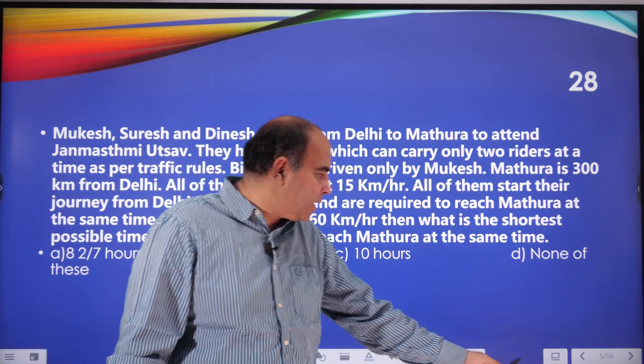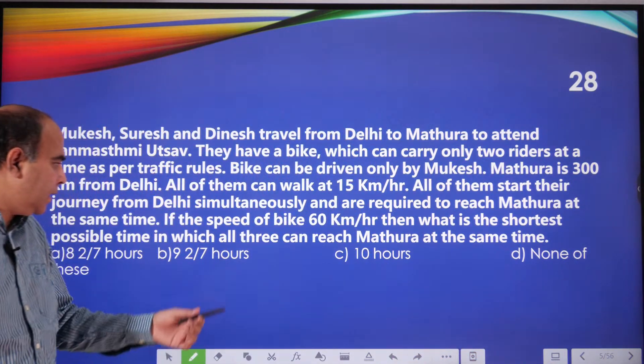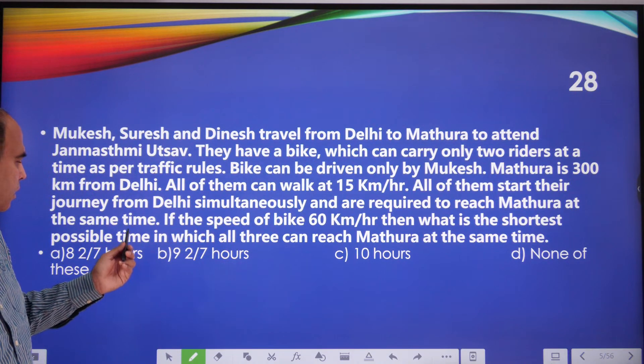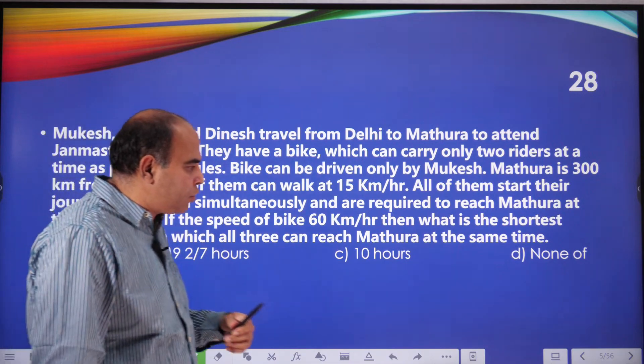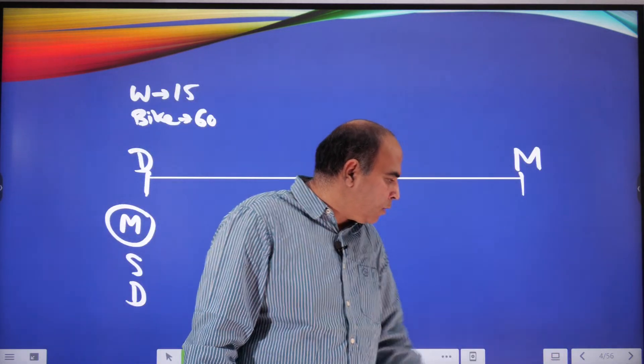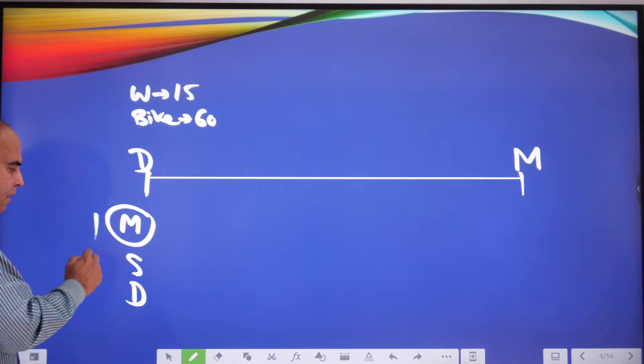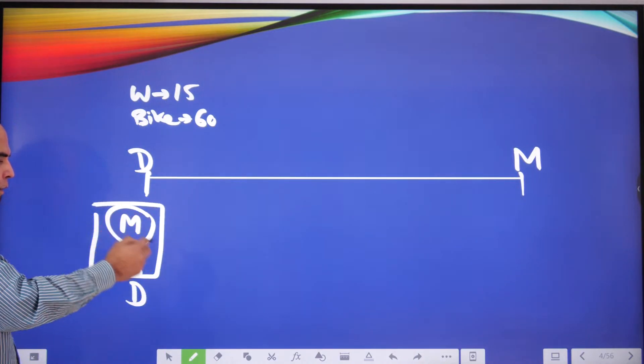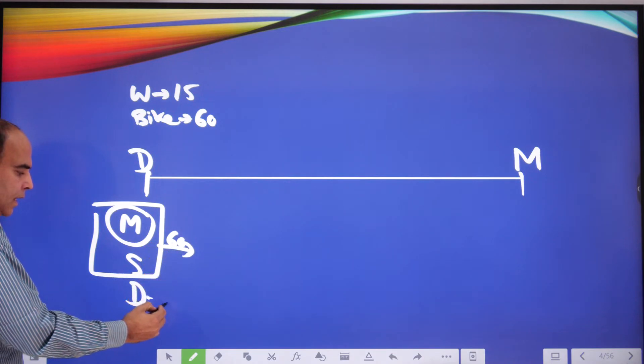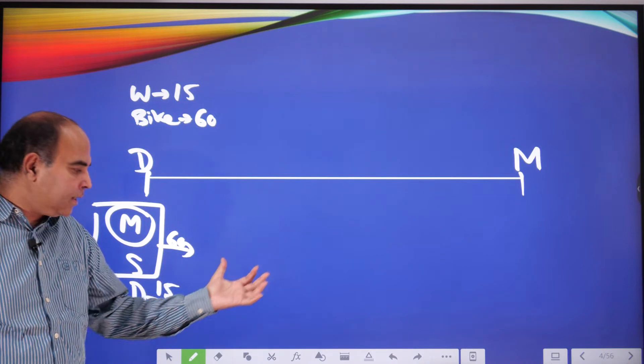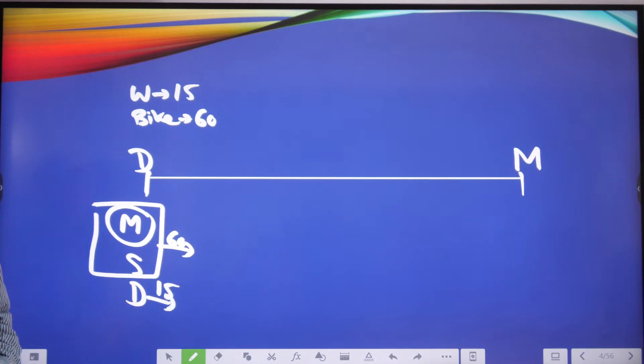So if I look at what is happening, they have told us that the speed of the bike is 60 kilometers per hour and the question being asked is what is the shortest possible time in which all three can reach Mathura at the same time. Dinesh follows them at a speed of 15 and he starts walking. Let's say this is the starting part of the journey.